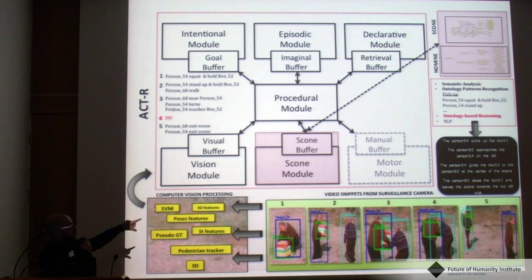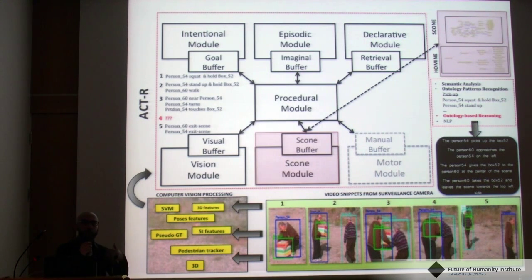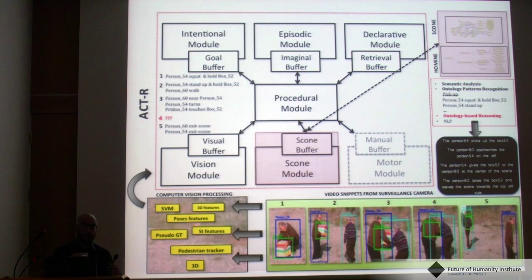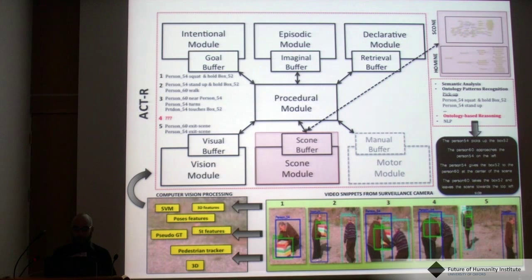Using SCONE and HOMINI, through the process of spreading of activation and partial matching, we are able to perform a semantic analysis of the scene and carry out the ontology pattern recognition needed — for example, to recognize that the verb 'pick-up' is present because there are basic movements and basic actions occurring.